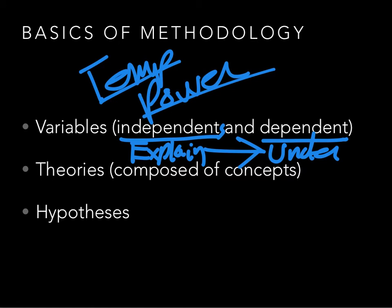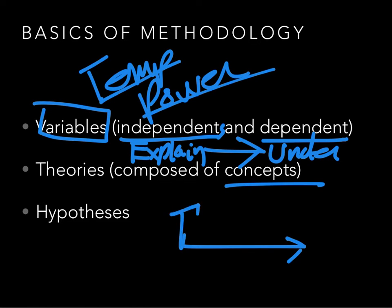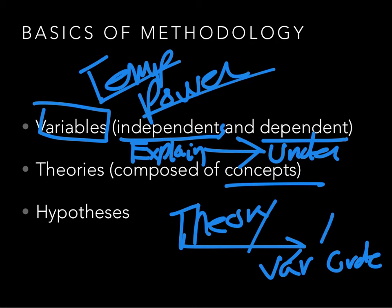Theories are composed of variables and concepts, meaning I'll have a theory about how the world works. For example: students who sit near the front of class will do better. That's a theory. It has a bunch of variables — what does 'do better' mean? Maybe the variable is grade, or it could be attendance. You can think of a theory as a story — a scientific story about how the world works — that uses variables and concepts to explain, via independent variables, what's occurring.